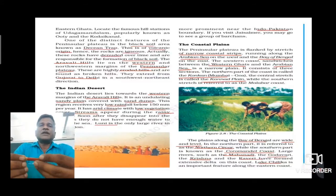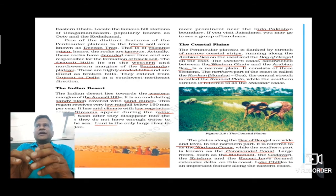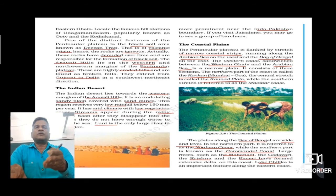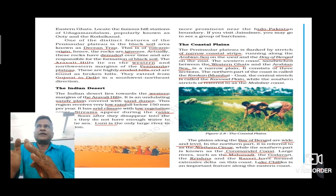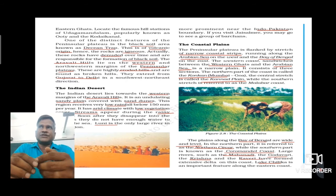Now we are going to discuss the next physiographic division — the Indian Desert, also called the Thar Desert. The Indian Desert lies towards the western margins of the Aravalli Hills. These Aravalli Hills divide Rajasthan almost into two parts — eastern and western. The desert lies completely in the western part of the Aravalli, in districts like Jaisalmer, Barmer, and Bikaner.